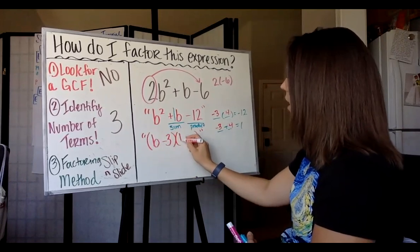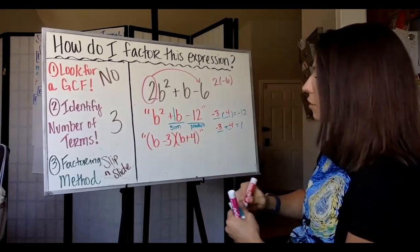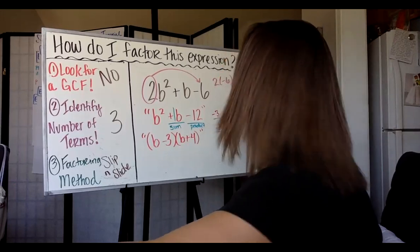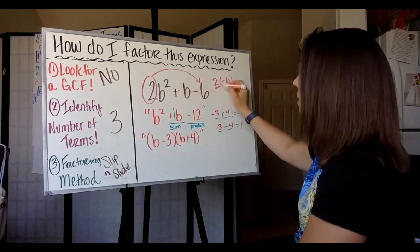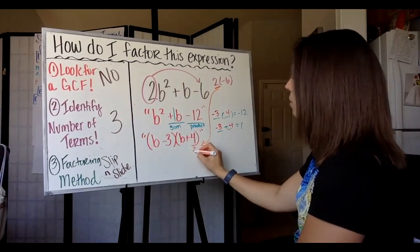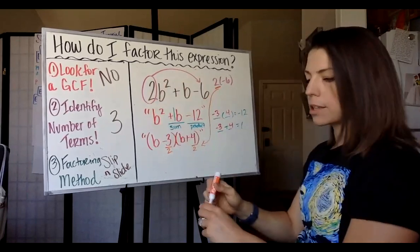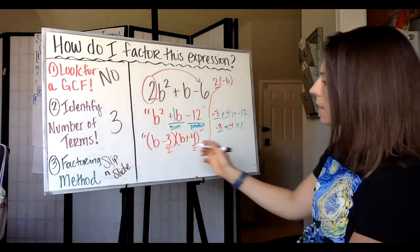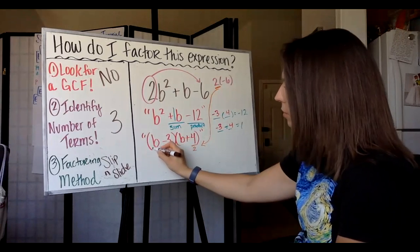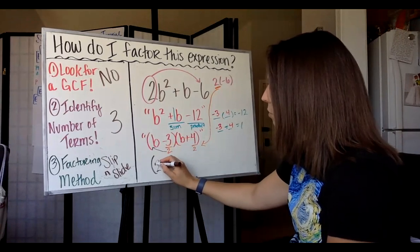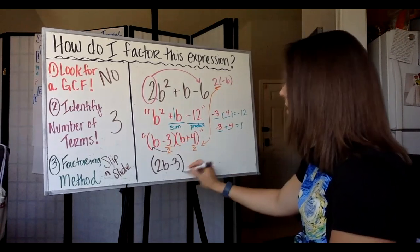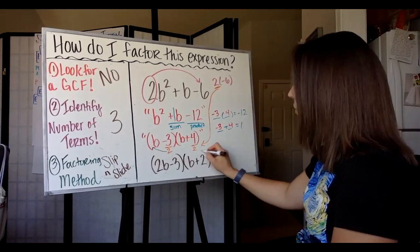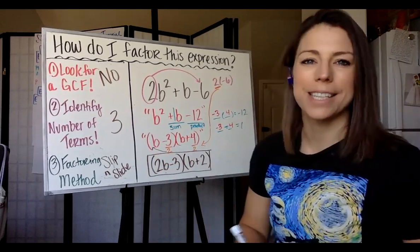We factor the alternate trinomial as B minus 3 times B plus 4. Remember, this is not your final answer. Now we slide the 2 back underneath the two terms to undo the slip. If we can simplify the fraction, we do; if not, we slide it in front. Can I simplify 3 over 2? No — so it slides in front, giving 2B minus 3. Can I simplify 4 over 2? Yes — that gives B plus 2. So the final answer is 2B minus 3 times B plus 2.